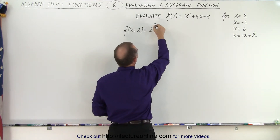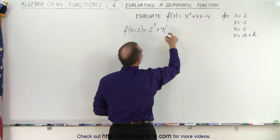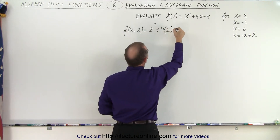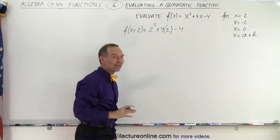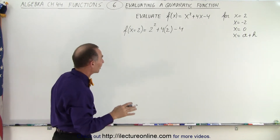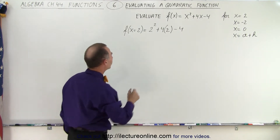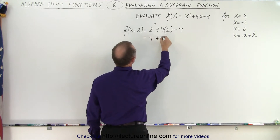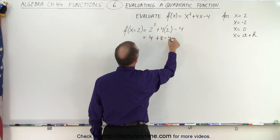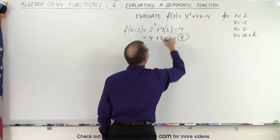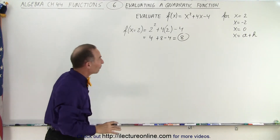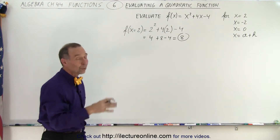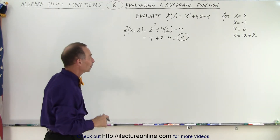So that's 2 squared plus 4 times 2, minus 4. That's how we evaluate the function for the value x equals 2. We can finish it up: this is equal to 4 plus 8 minus 4, which is equal to 8. So that's the evaluation of the function — when x equals 2, y is equal to 8, or the function equals 8.